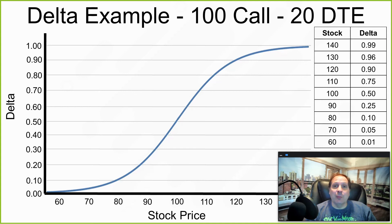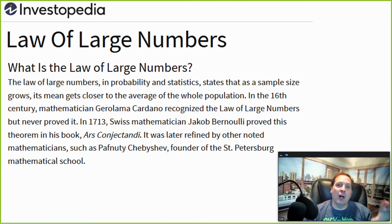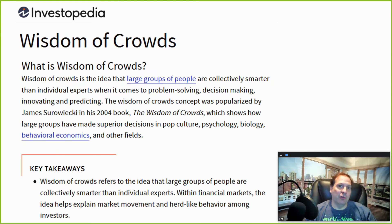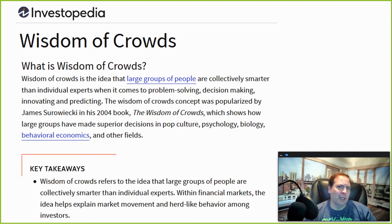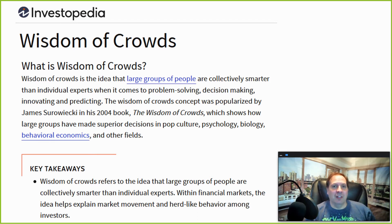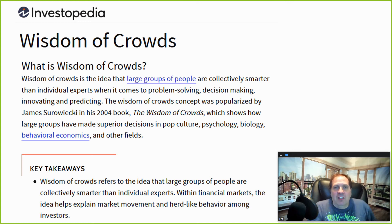How does delta become such a good predictor of whether an option is going to be in the money at expiration? The answer is twofold. First, it's the law of large numbers and the wisdom of crowds. We have market makers, hedge funds, insurance companies, institutional traders, and traders like you and me. None of us could individually predict where the stock is going, but together the wisdom of crowds allows us as a group to collectively predict where the market is going accurately. With that, we derive implied volatility, which then falls into delta.